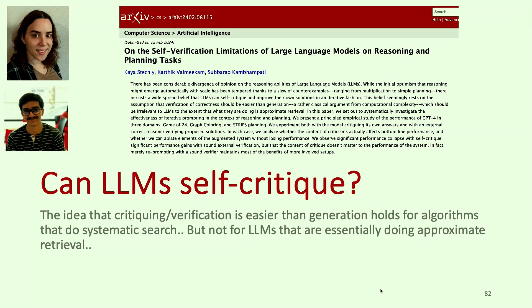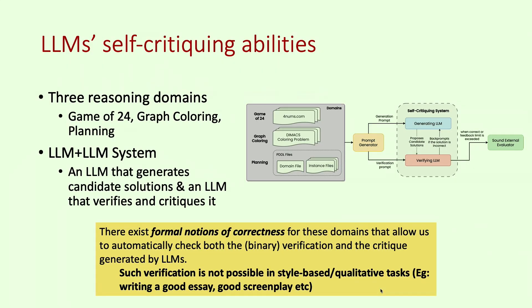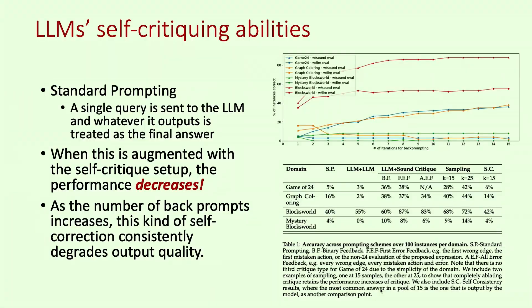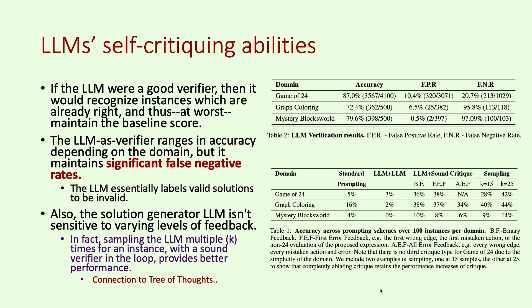Can LLMs self-critique? The reason people think so is that generation is typically harder computationally than verification. For the kind of planning problems we're looking at, planning is PSPACE-complete, but verification is only polynomial time. So people think maybe LLMs can't do PSPACE-complete problems but can do polynomial ones. That's crazy because they're not doing any reasoning at all — they can solve semi-decidable and undecidable problems with the same lack of guarantees as constant-time problems. We looked at this in the game of 24, graph coloring, and planning problems, and showed that when LLMs actually correct themselves, their performance worsens.